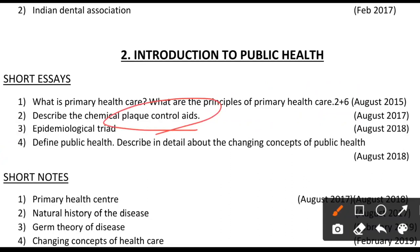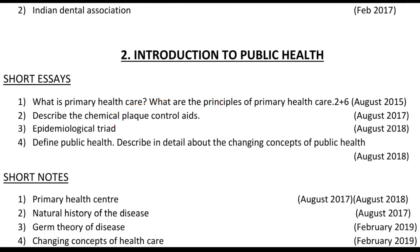Next, describe chemical plaque control — this actually falls under epidemiology of periodontal disease. Plaque control includes mechanical and chemical methods; list out all the methods and elaborate to get eight marks. Always think about the marks when writing. After that, we have the epidemiological triad — agent, host, and environmental factors — which you can elaborate with an example of any disease.